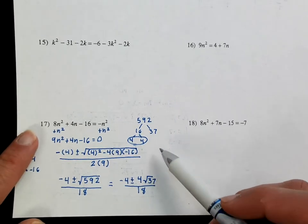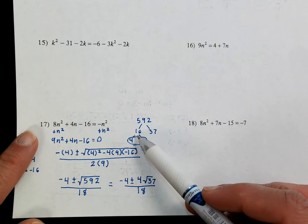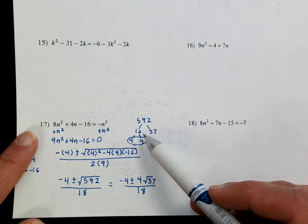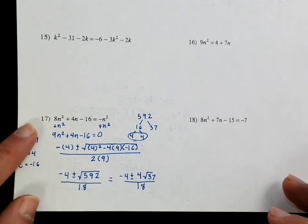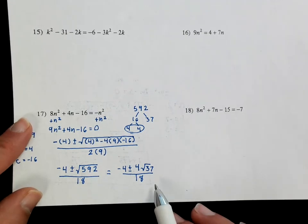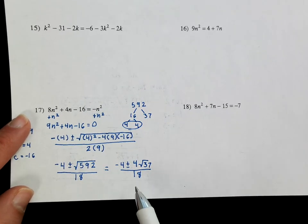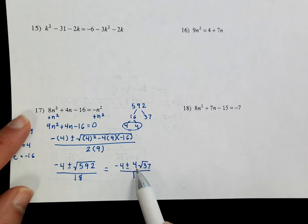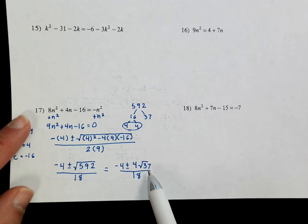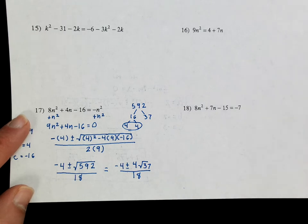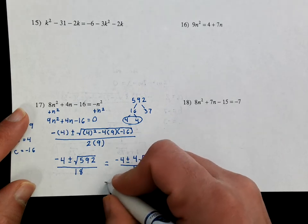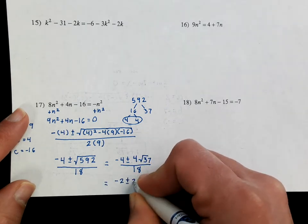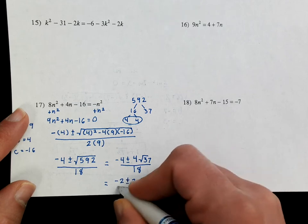The last thing you have to do is look at it and see if you can reduce this fraction. When you reduce, you've got to reduce this number, that number, and this number — do not touch that square root. The number inside the square root is not going to change, so don't touch it. All of these numbers are divisible by 2, so you can actually reduce this to negative 2 plus or minus 2 square root of 37 over 9. And that's it.